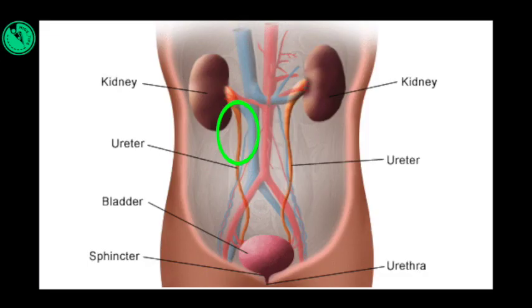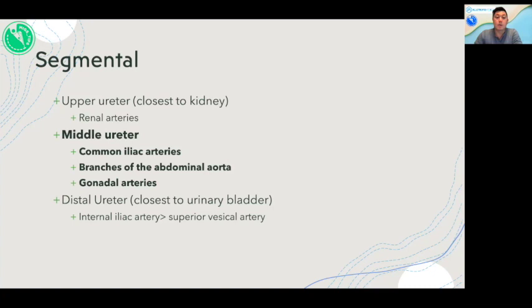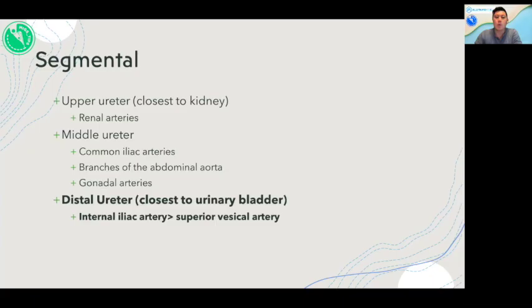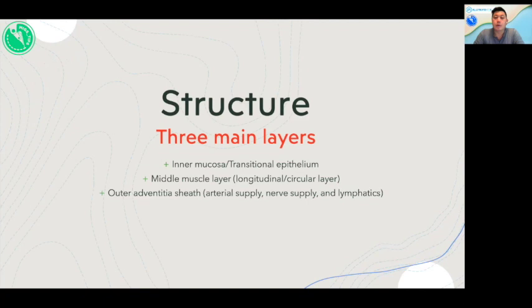Ureteral blood supply. The ureter's blood supply is segmental. The upper ureter receives its blood supply from the renal arteries. The middle ureter receives its blood supply from the common iliac artery, branches of the abdominal aorta, and gonadal arteries. While the distal ureter receives its blood supply from the internal iliac artery, specifically mostly from the superior vesicle artery.